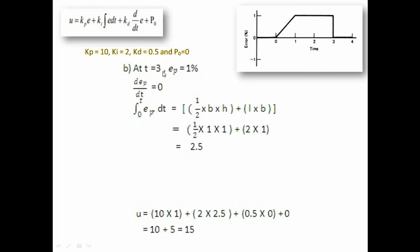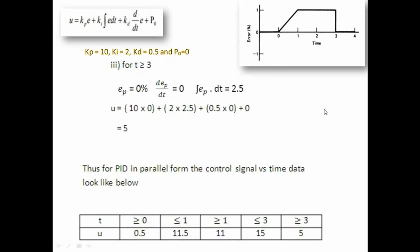At t = 3, the error is 1 percent and the derivative is 0 (horizontal line). For the integration at t = 3, we calculate the area under the curve: this includes a rectangle area plus the triangle, giving a total area of 2.5. So the integration of error is 2.5. Substituting these values into the u equation gives u = 15.